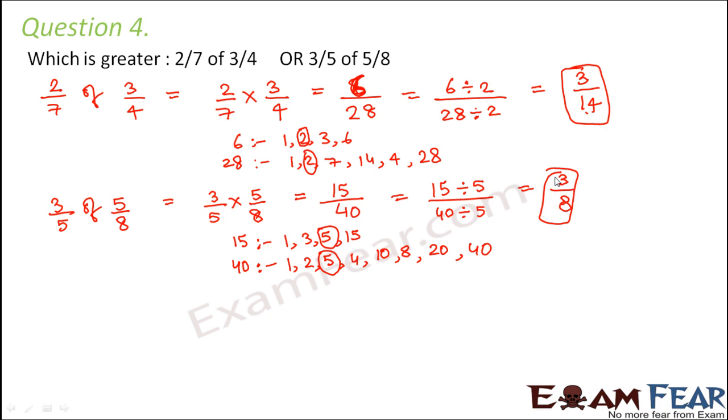So this value would be 3 by 8. So now we have to determine whether 3 by 14 is greater or 3 by 8 is greater. Now when you compare these two you see that these are unlike fractions, they have different denominators. So we need to convert them into fractions with the same denominators.